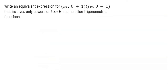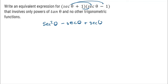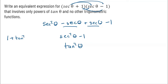This problem says: write the equivalent expression for (secant θ + 1)(secant θ − 1) that only involves powers of tangent. I'll just FOIL — first, outside, inside, last. Secant times secant is secant squared θ. Secant times negative 1 is negative secant θ. 1 times secant is positive secant. And 1 times negative 1 is negative 1. The negative and positive secant cancel, leaving secant squared θ minus 1. Using the Pythagorean identity — 1 plus tangent squared equals secant squared — subtracting 1 gives secant squared minus 1 equals tangent squared.